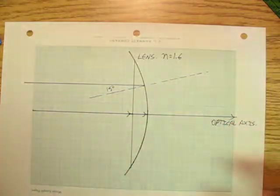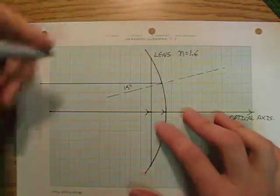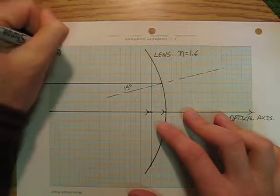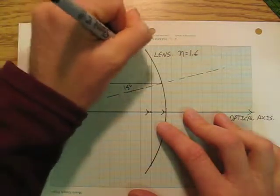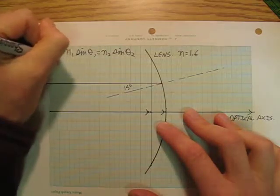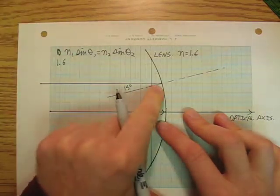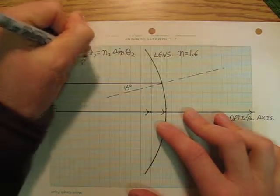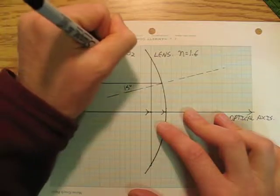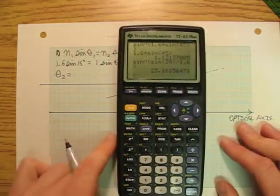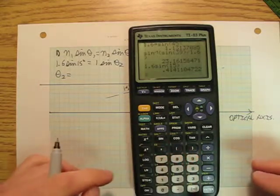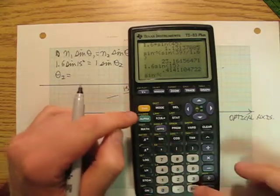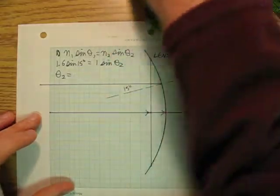So if I use Snell's law it's going to be n1 sine theta 1 is equal to n2 sine theta 2. The n1 that I'm going to use is going to be 1.6 because I've already gotten into the lens. Sine 15 degrees is equal to 1 sine theta 2, and so that means my theta 2 is going to be 1.6 sine 15 degrees and then I'm going to take the sine inverse of that and I'm going to get 24.5 degrees.